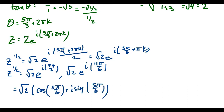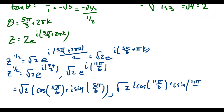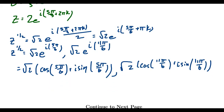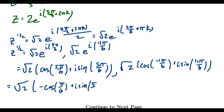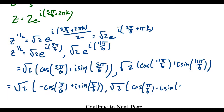The first square root is the square root of two times (cosine of five pi over six plus i sine of five pi over six). The second square root has the same modulus, root two, but with cosine of eleven pi over six plus i sine of eleven pi over six. Note that five pi over six and eleven pi over six both reference pi over six (30 degrees). Five pi over six is in the second quadrant, so cosine is negative and sine is positive. Eleven pi over six is in the fourth quadrant, so cosine is positive and sine is negative.